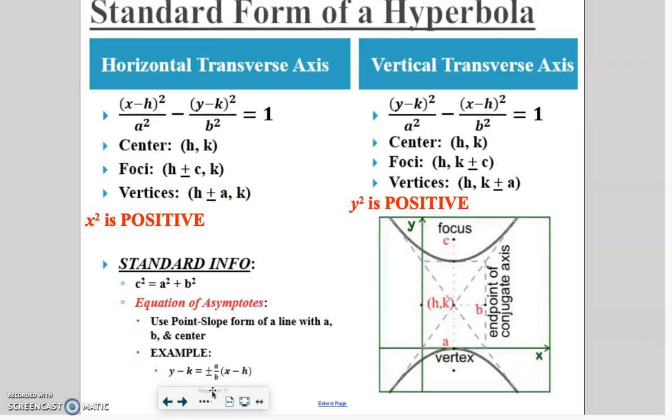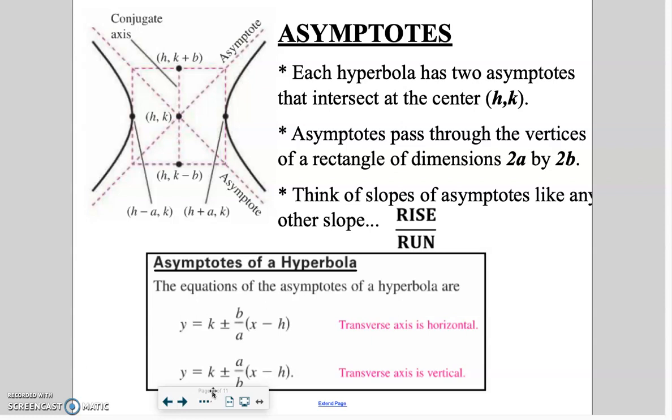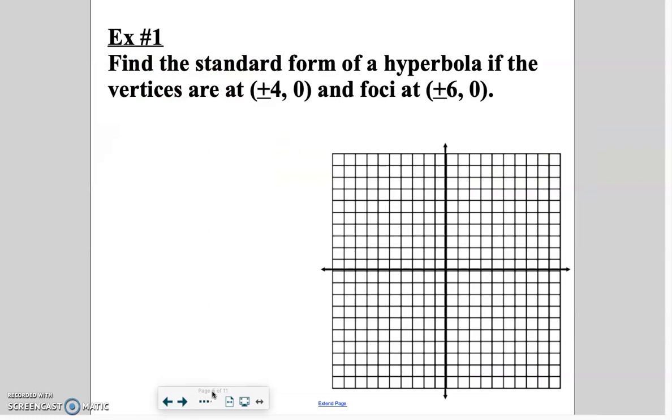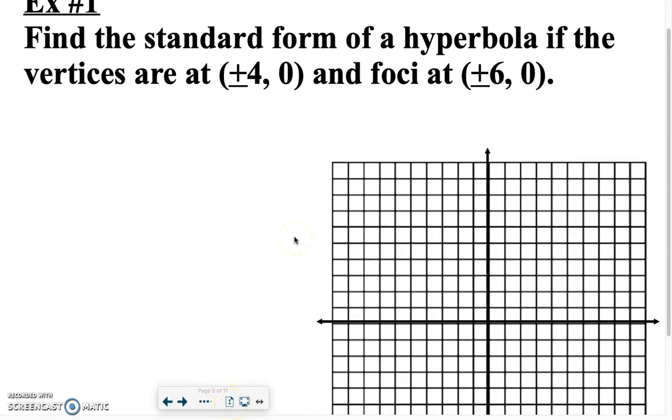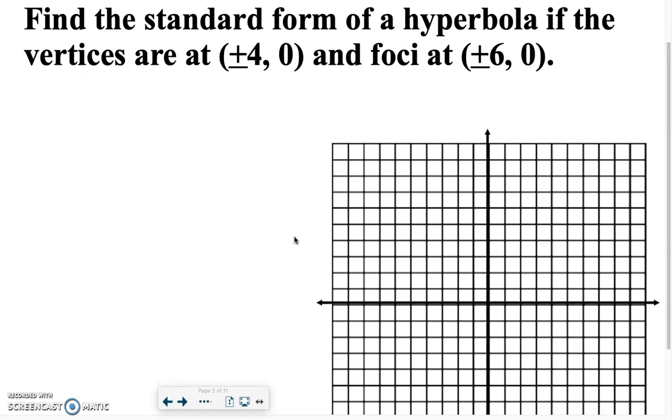Again, already discussed and talked thoroughly through asymptotes and how they work, how they are built. We feel like through our bell work and through the homework discussion, I feel like we've already worked with asymptotes quite a bit today. So let's just jump directly into the type of question that we're going to see. So example number one, it says that we want to find the standard form of a hyperbola. If the vertices are at plus minus 4, 0, and the foci are at plus minus 6, 0.